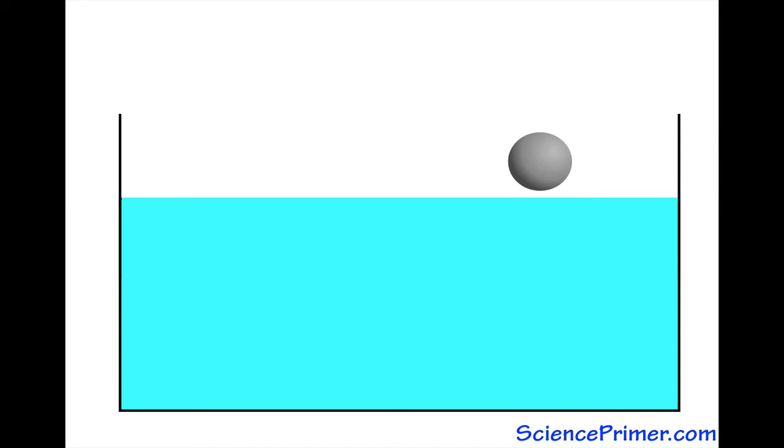Whether an object floats or sinks when placed in a liquid depends on the density of the object relative to the density of the liquid it's placed in. If the object is less dense than the surrounding liquid, it floats. If it's more dense, it sinks.